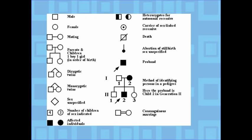Here are some symbols used in pedigrees. A male is represented by a square, and a female is represented by a circle. A mating between a male and female is represented by a line drawn directly between the two. Parents and children together show the mating line up top and a line coming down to their offspring. Affected individuals will be shaded in. If an individual is heterozygous for an autosomal recessive trait, they are half shaded in, showing they are a carrier.